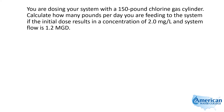You're dosing your system with a 150 pound chlorine gas cylinder. Calculate how many pounds per day you are feeding to the system if the initial dose results in a concentration of 2 milligrams per liter and system flow is 1.2 MGD. So we're looking for pounds per day, and we have a dose of 2 milligrams per liter and a flow of 1.2 MGD.